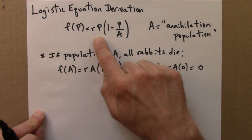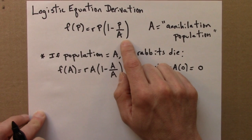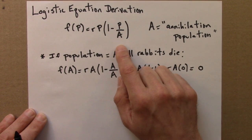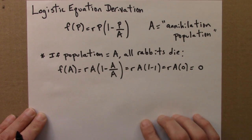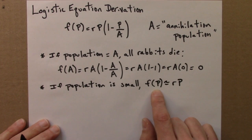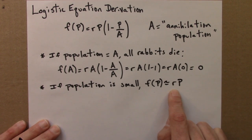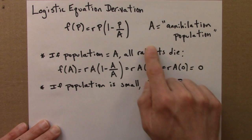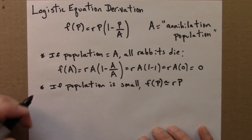There's another property of this equation that I want to mention that I think makes sense. And that is if the population is small, then it'll look very close to the original model we studied. So for small populations, we're very far away from the apocalypse or the annihilation. We should see the rapid growth that we saw earlier. It's only when p gets to be large that the rabbits start to run out of food or are competing with each other for space that the population growth might start to slow down. So first I should say what I mean by small. By small I mean that p is much less than a.